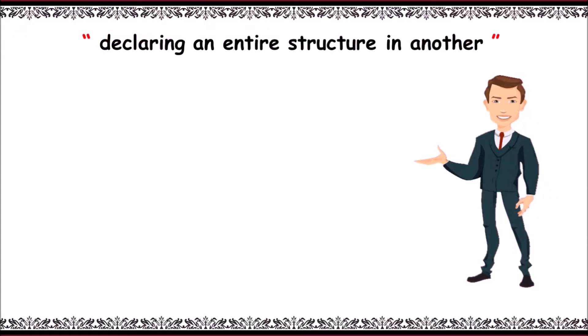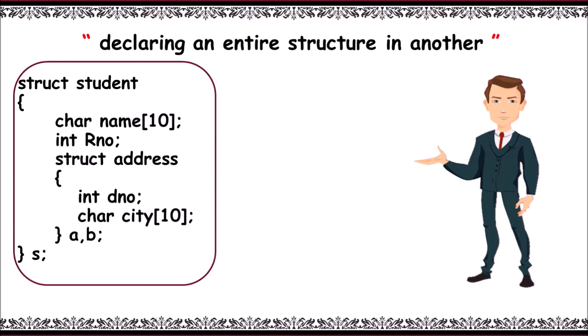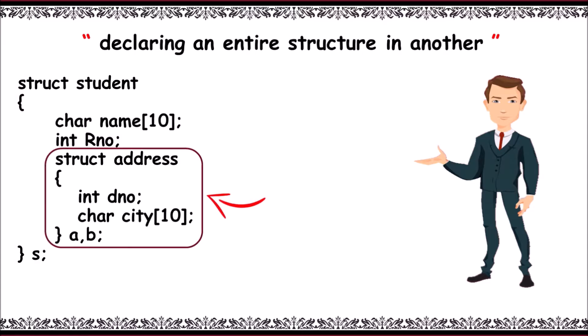For the nested structure concept — declaring an entire structure inside another — consider a structure 'student'. It contains members 'name' of size 10 and 'rno'. Then another structure 'address' is declared inside 'student', containing 'dno' and 'city' as members. Variables 'a' and 'b' are of type address, and 's' is a variable of student.